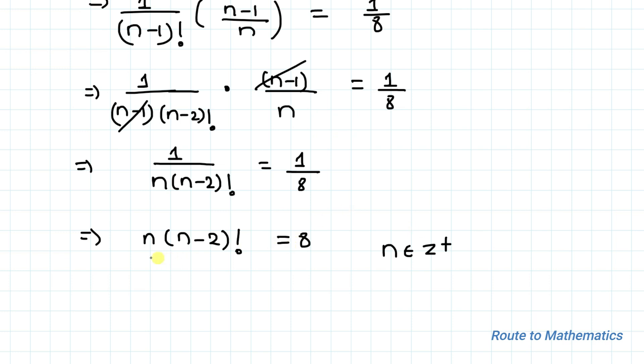So in order to satisfy this given equation, the only value possible is n equals to 4. So let's just check if 4 is satisfying the given equation. We have 4 multiplied with (4-2)! which is equal to 4 times 2! which equals to 8.